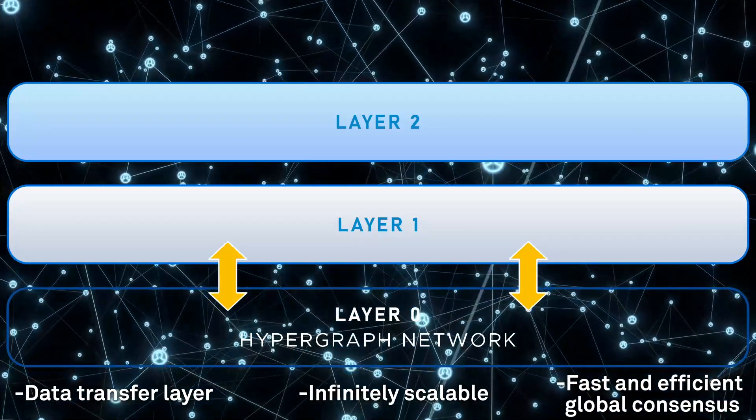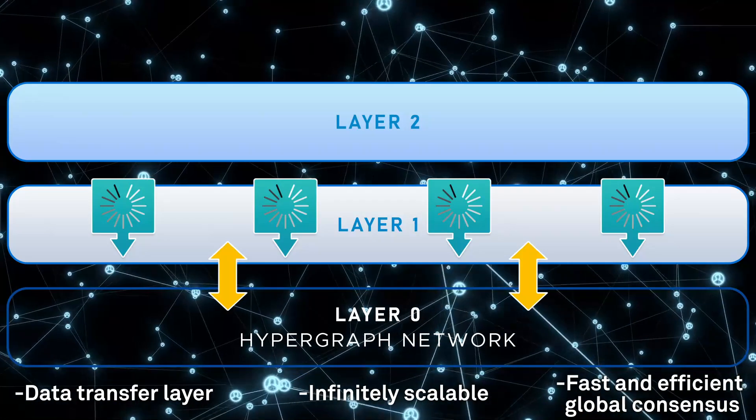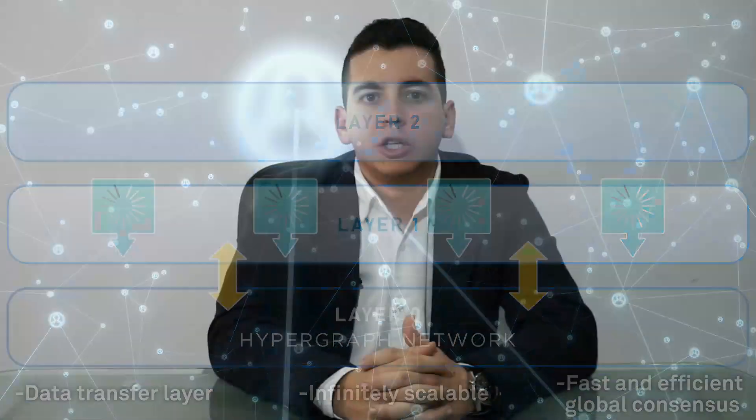Constellation uses an ingenious state channel model which operates on the layer above the hypergraph, layer 1. Just as the hypergraph network is the evolution of the blockchain, the state channel is the evolution of the smart contract. State channels support all types of business transactions that can interact with the underlying network, as needed to give users the best of both worlds.